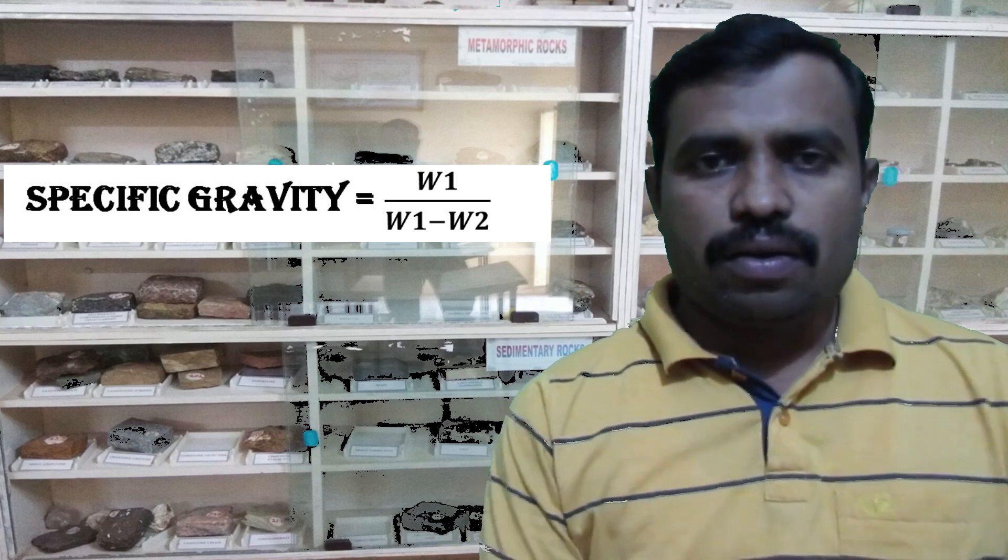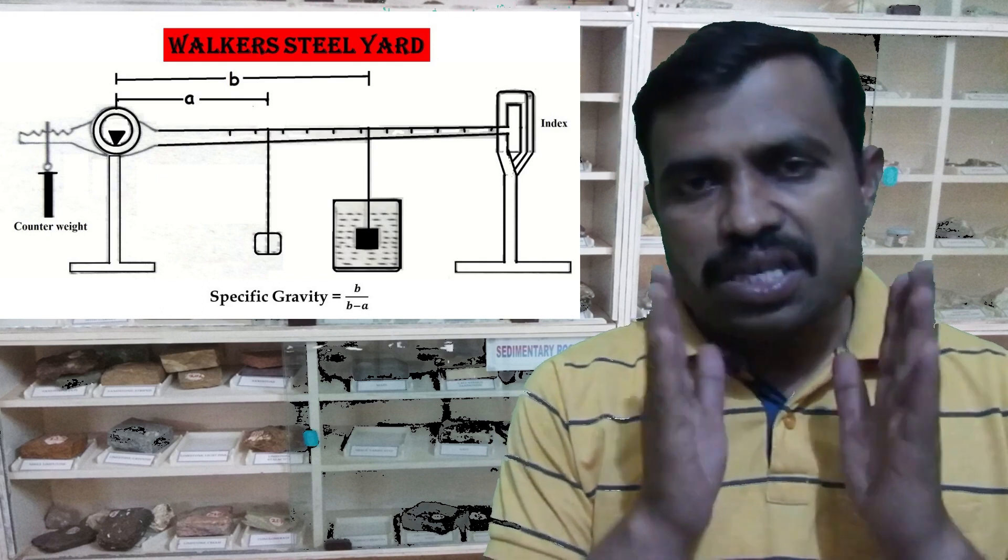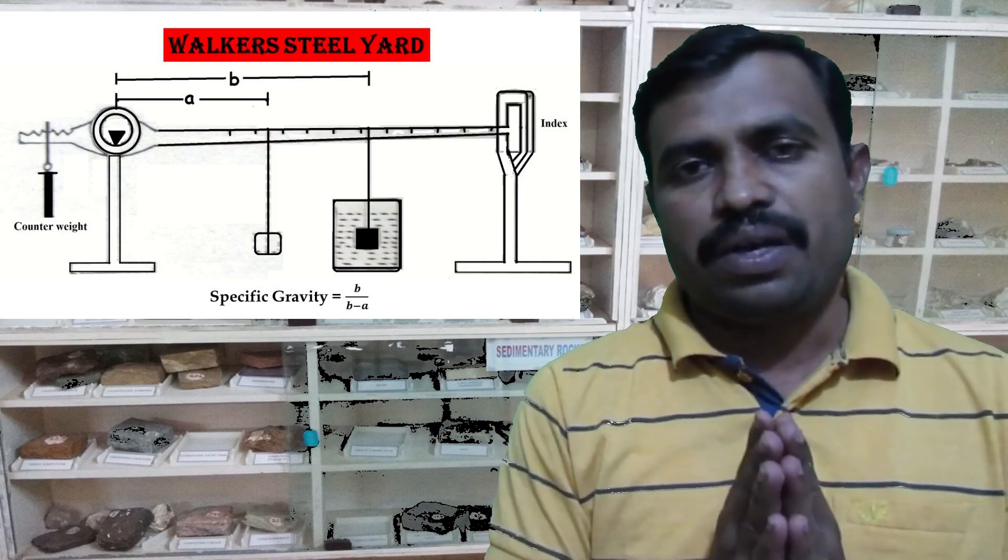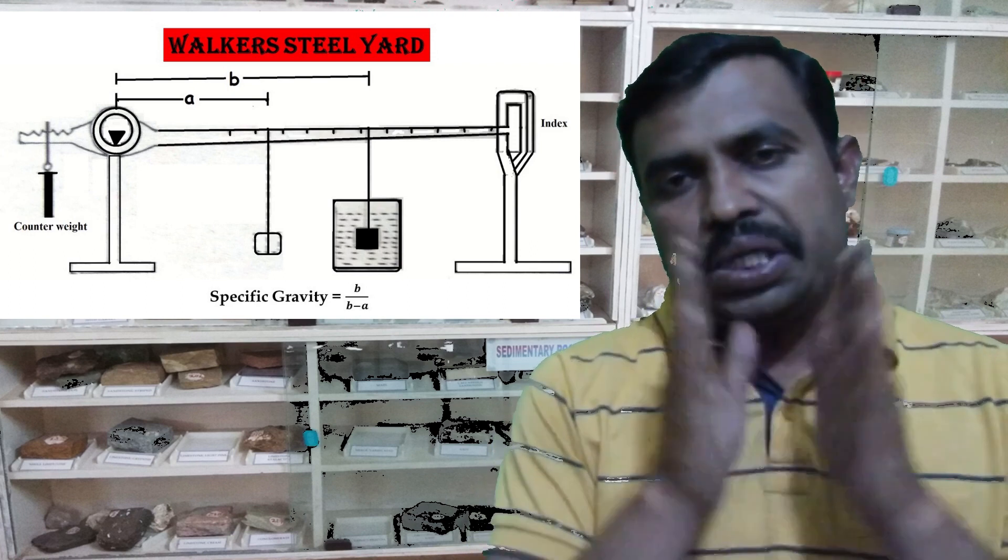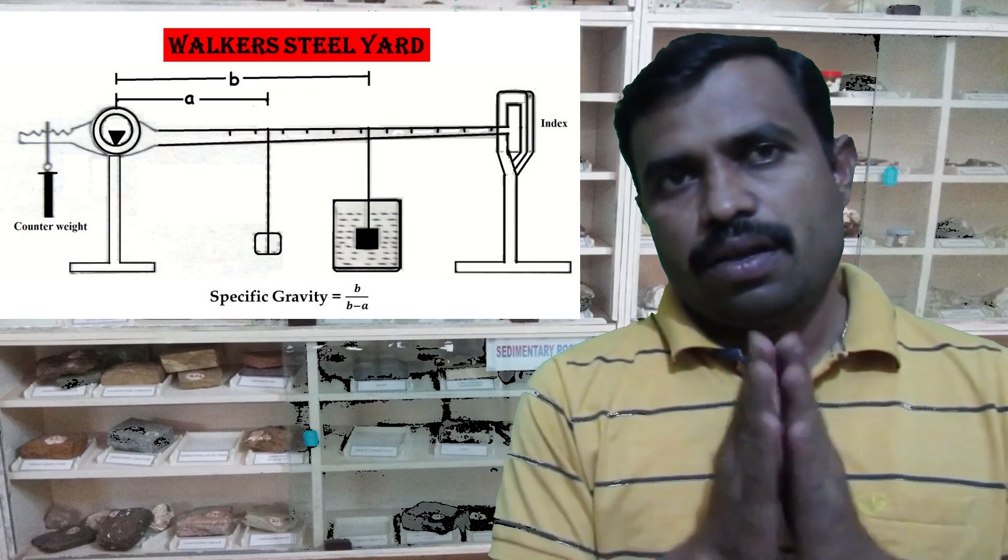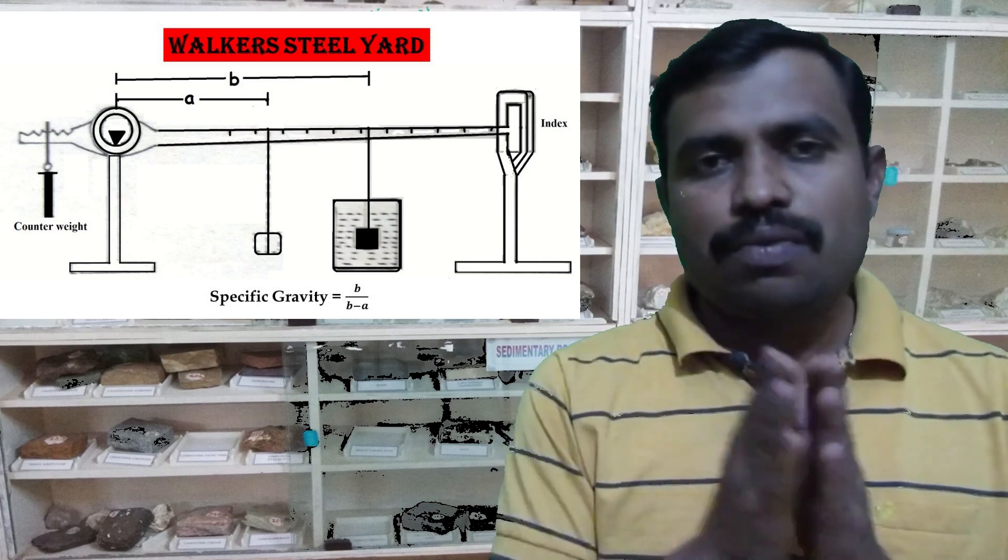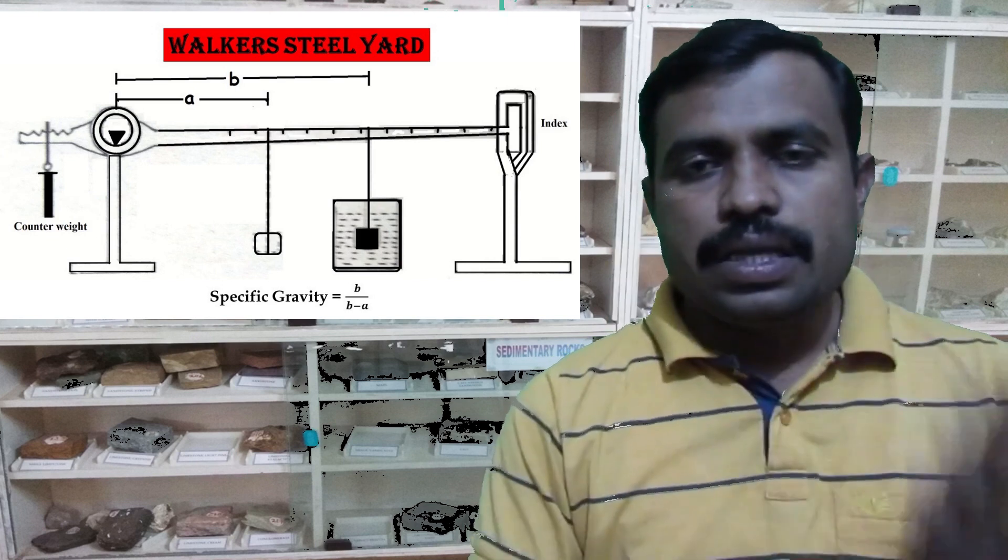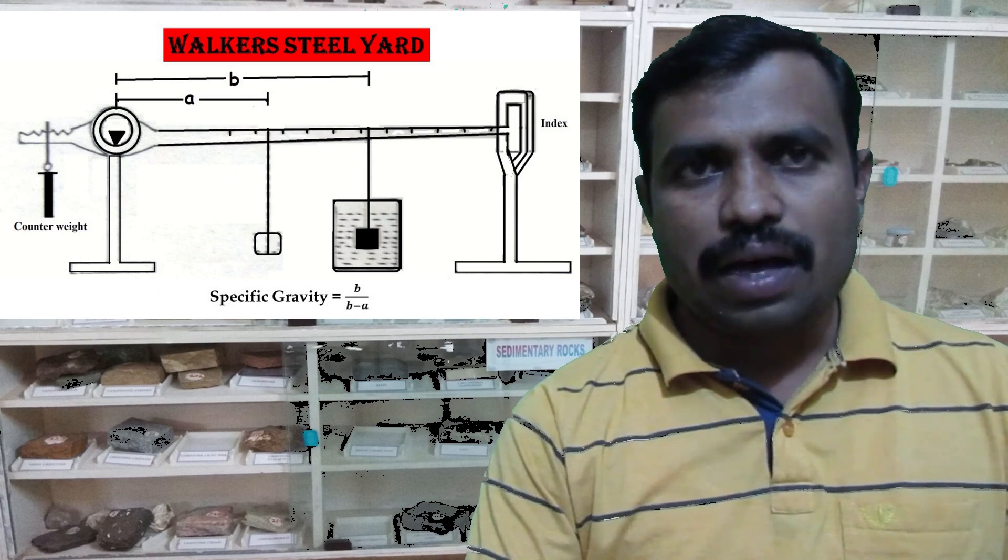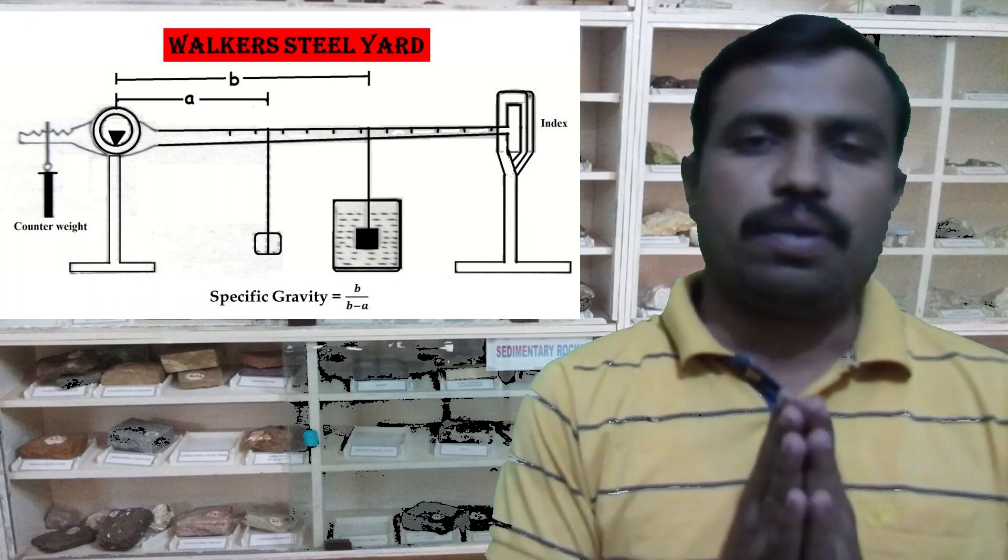There are two instruments basically used to determine the specific gravity. One is the Volker's steelyard and second one is the Jolly's spring balance. These two instruments are used to determine the specific gravity of a particular mineral.